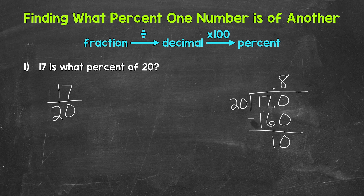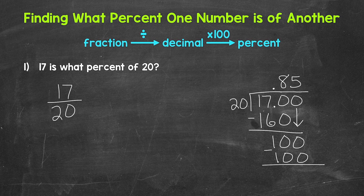We don't have a clean-cut zero at the bottom, so we need to continue on. We bring down another zero. Now we have 100, and 100 divided by 20 equals 5. Multiply: 5 times 20 is 100. Subtract: 100 minus 100 is 0. Now we have that clean-cut zero, so we are done. 17 divided by 20 equals 0.85 — 85 hundredths.